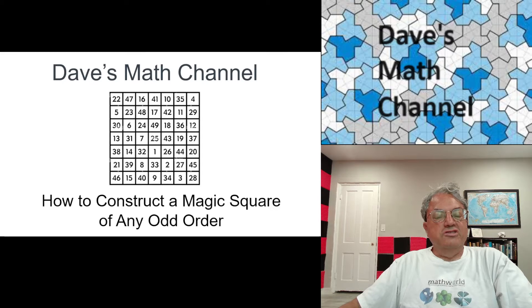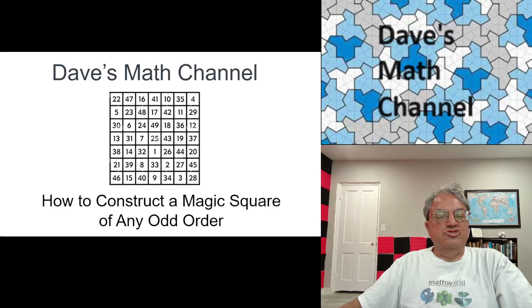I'm your host David Tehr and today I'm continuing with my series on magic squares. Today I'm going to talk about a method you can use to construct a magic square of any odd order you want, three or greater. The smallest magic square is the order three, that's the Lo Shu square I talked about a couple days ago.